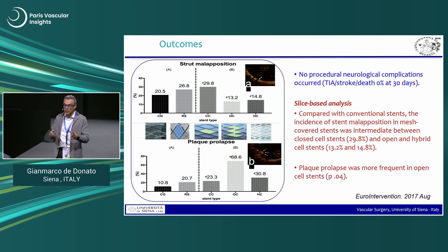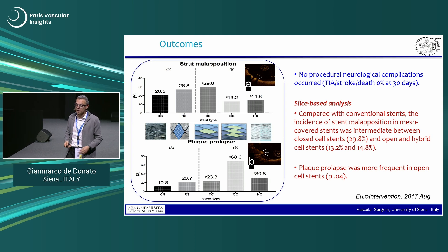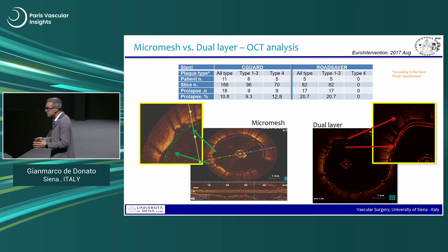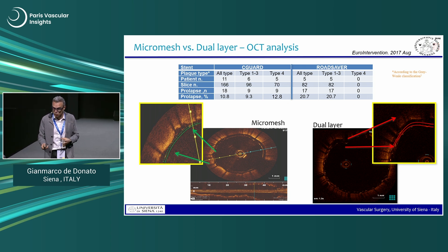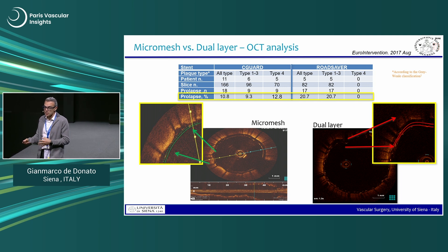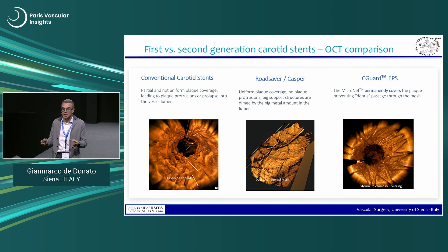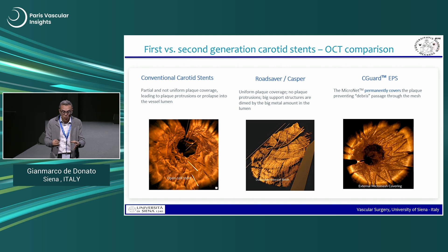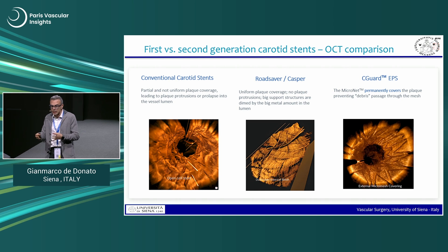Comparing CGuard and RoadSaver to historical results: both second-generation stents show less plaque prolapse, with CGuard performing best. In a sub-analysis by Gray-Weale plaque classification, for the highest-risk type-1 plaque, prolapse was 9% with CGuard versus 20% with RoadSaver. In 3D reconstruction, open-cell first-generation stents show an irregular luminal surface; dual-layer is better but with more metal; the micronet provides the smallest surface area.